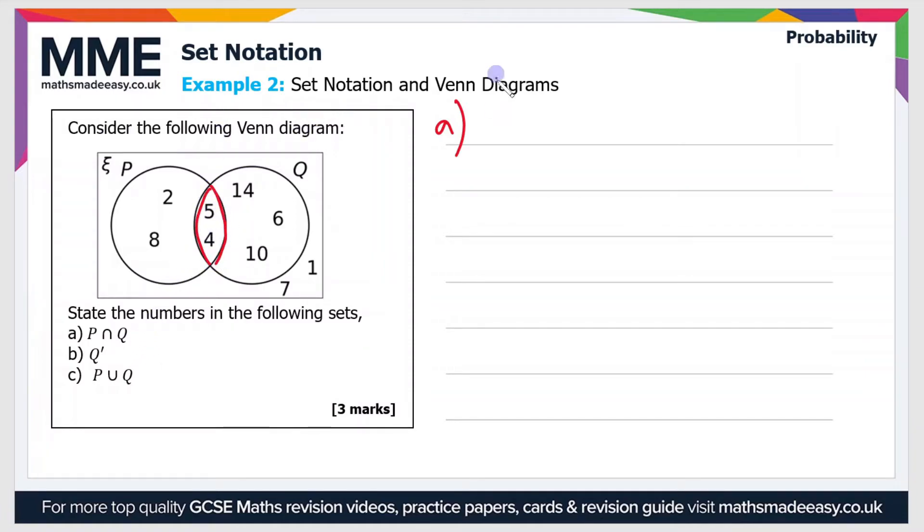So that includes the numbers 4 and 5. So if we write our answer in set notation, we have P ∩ Q equals {4, 5}. And then part b.